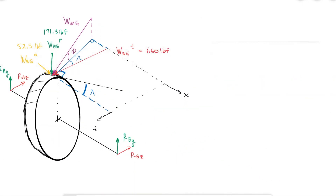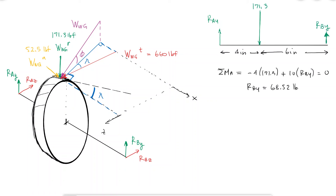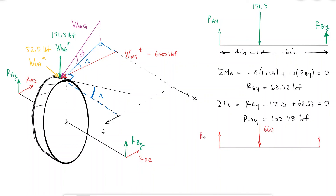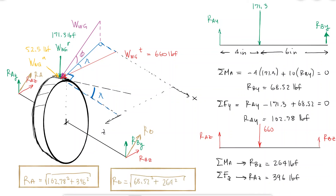For example, in the XY plane I can do a sum of moments about A to find R_BY and a sum of forces in the y-direction to find R_AY. The same for the XZ plane gives the reaction forces in the z-direction at both bearings. The total reaction force at A and B is found with a simple Pythagorean calculation, and it is reasonable to assume the axial load is divided equally between the two bearings.